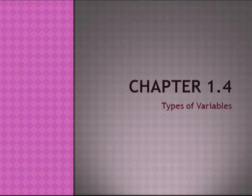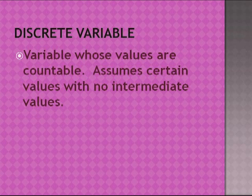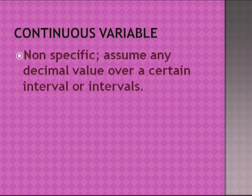Chapter 1.4: Types of Variables. A quantitative variable is a numerical response — a variable that can be measured numerically. Data collected on a quantitative variable is called quantitative data. A discrete variable is a variable whose values are countable, assuming certain values with no intermediate values. A continuous variable can assume any decimal value over a certain interval or intervals.